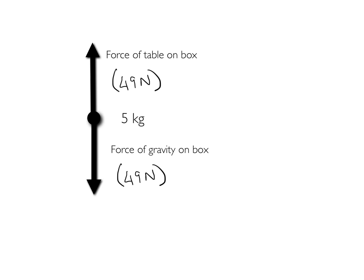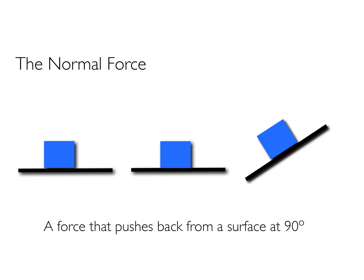Every time you put something on a surface, it pushes back — and that actually has a name: the normal force. It's not called normal because it's ordinary; it's called normal because a normal is a line drawn at 90 degrees to the surface. If a box pushes on a surface, the surface pushes back at 90 degrees. Even when an object is sitting on a slope, the force normal is always at 90 degrees to the surface. In shorthand you'll see it labeled as Fn.